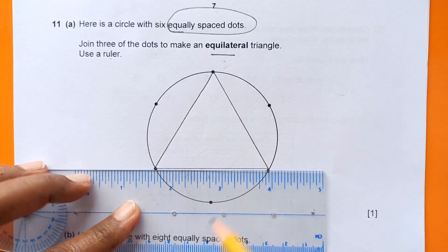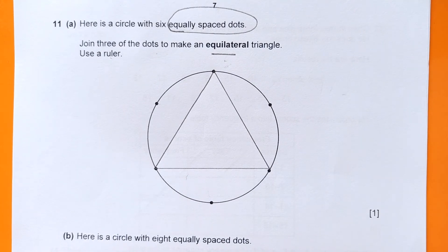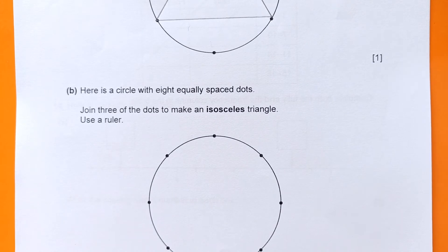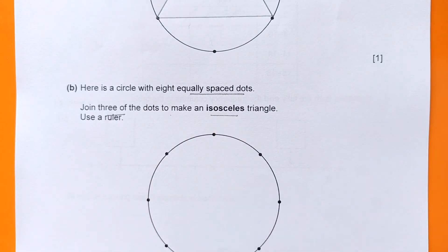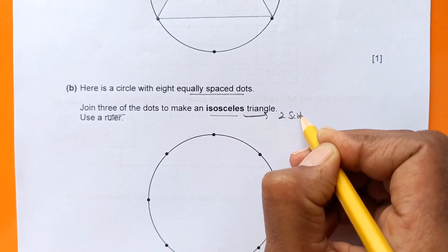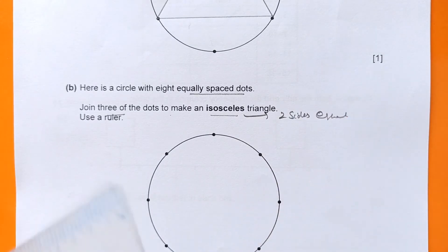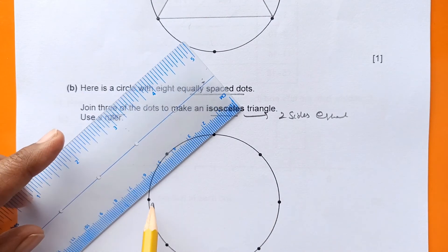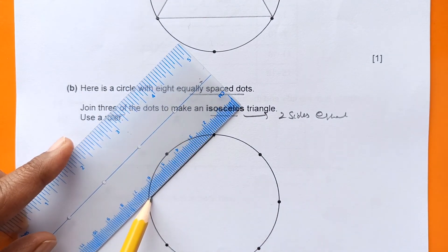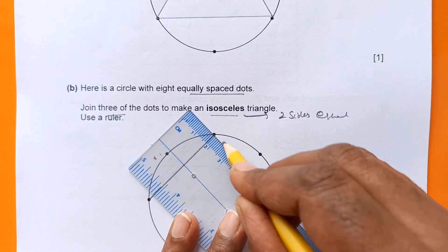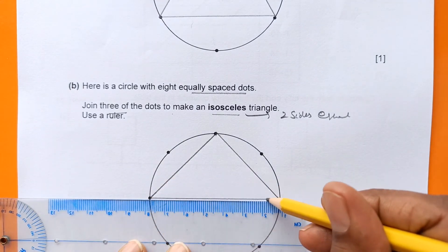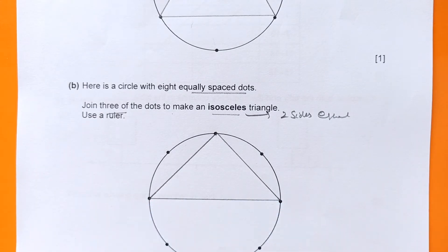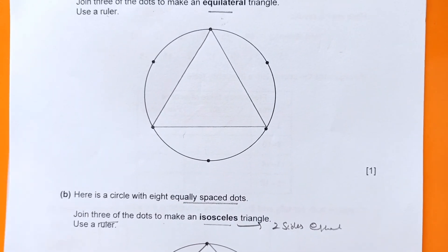Part B: Here is a circle with eight equally spaced dots. Join three dots to make an isosceles triangle. An isosceles triangle has two sides equal. There are many options. I'll use these dots — joining two that are at equal distance from a third point — so these two sides are equal. That's the isosceles triangle.